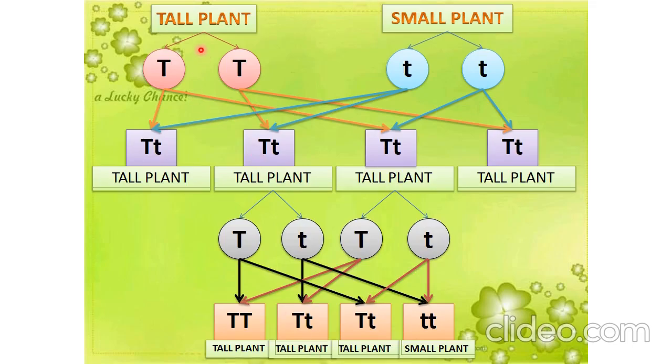This is the cross which you have to make in your notebook. Tall plant TT is crossed with a small plant tt. At the time of gamete formation, all the gametes get separated. When they combine, this capital T will combine with each t, so it will be Tt. Write the capital letter first and small letter later. In every case it will be Tt. What happened in F1 generation? We got all tall plants.